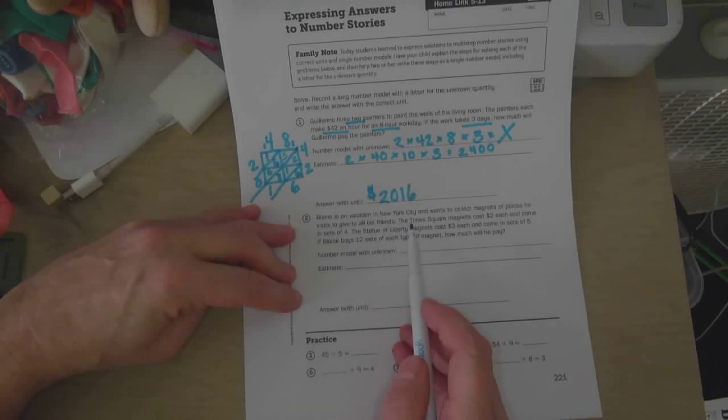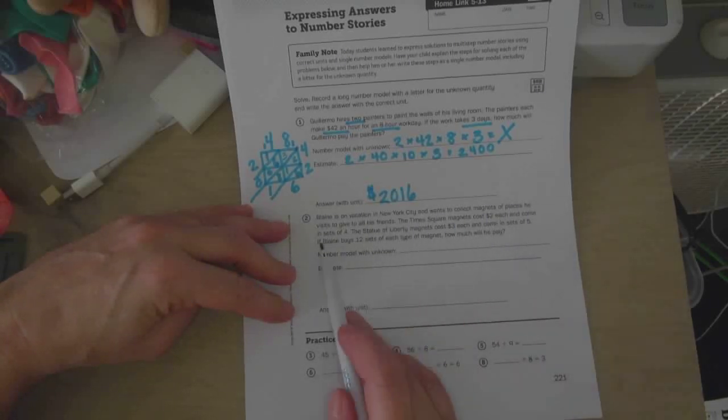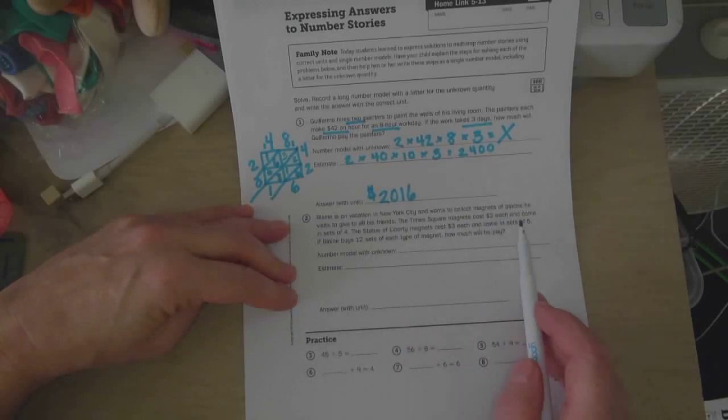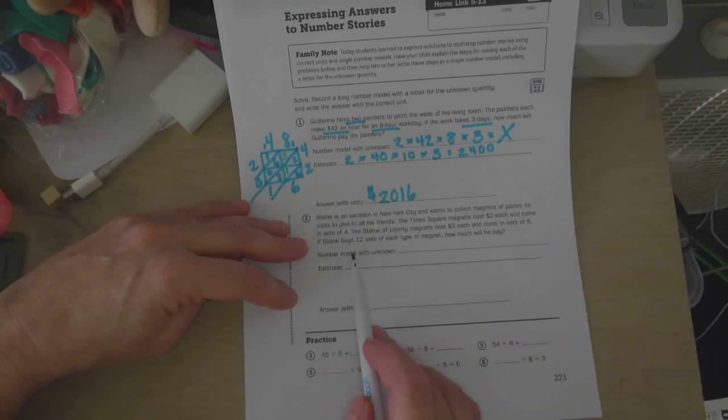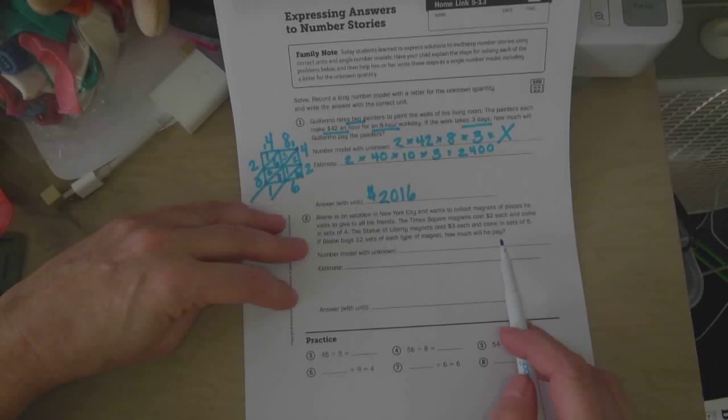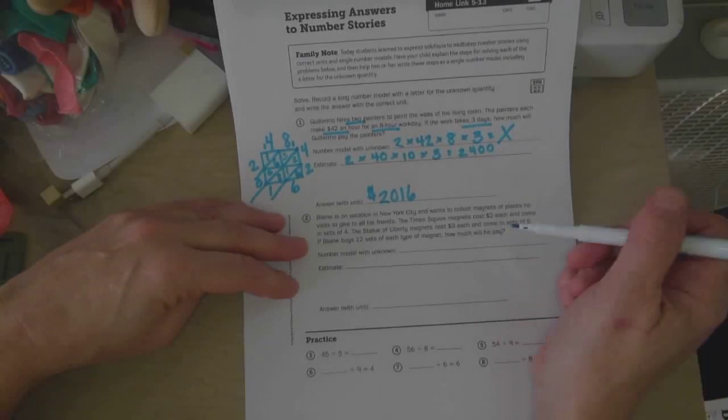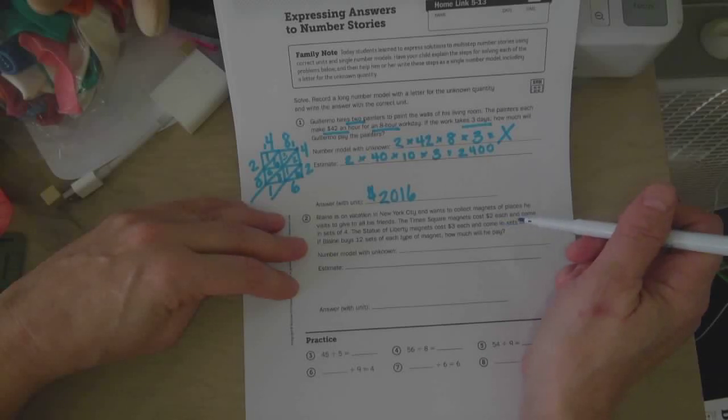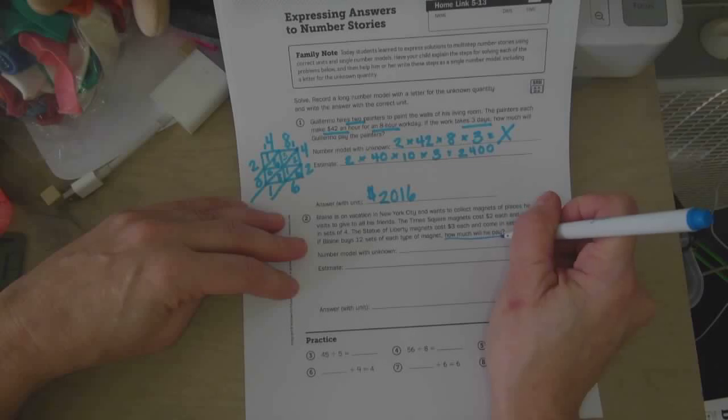So the next problem is, Blaine is on vacation in New York City and wants to collect magnets at places he visits to give to all his friends. The Times Square magnets cost $2 each and come in sets of 4. The Statue of Liberty magnets cost $3 each and come in sets of 5. If Blaine buys 12 sets of each type of magnet, how much will he pay? So he's got two different types of things here that we're going to be adding together, because it's asking us how much will he pay. It's a total.